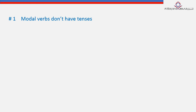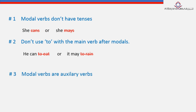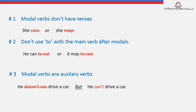What you have to remember is: modal verbs don't have tenses — we don't say 'he cans' or 'she mays.' We don't use 'to' with modal verbs — we don't say 'he can to do it' or 'it may to rain.' And finally, we don't use don't, doesn't, aren't, or isn't with modal verbs — we don't say 'he doesn't can't drive.' We simply say 'he can't drive.'